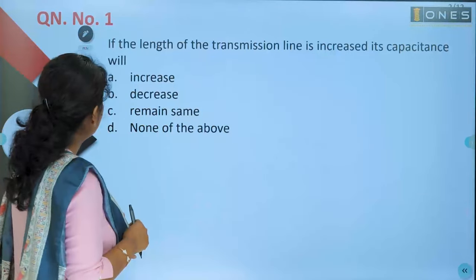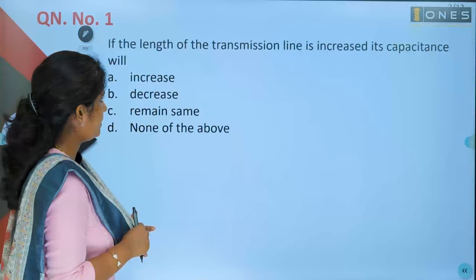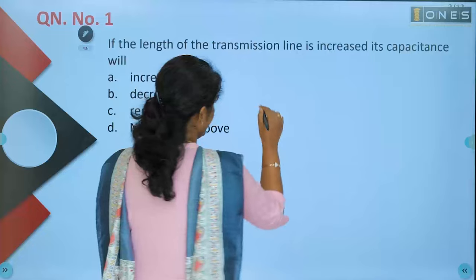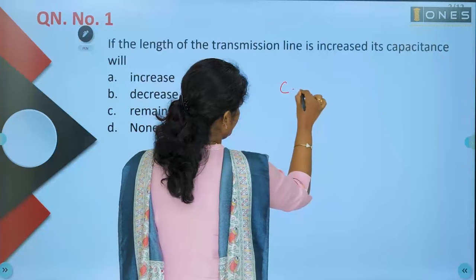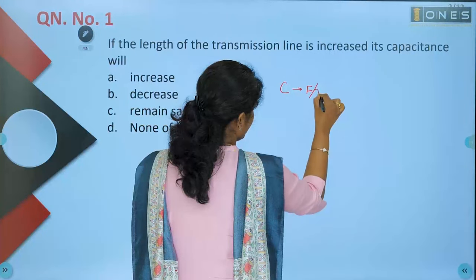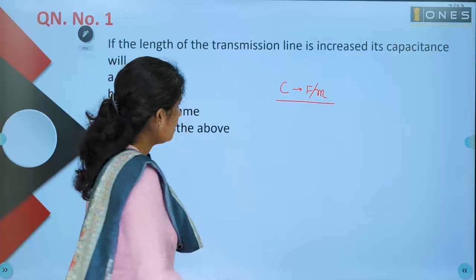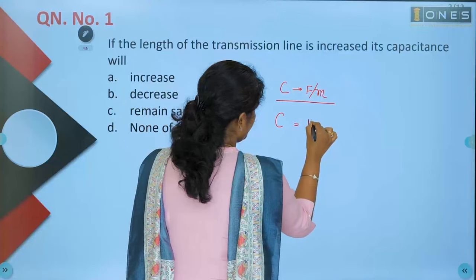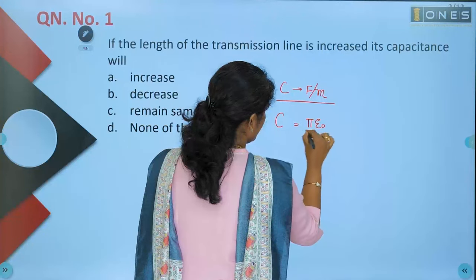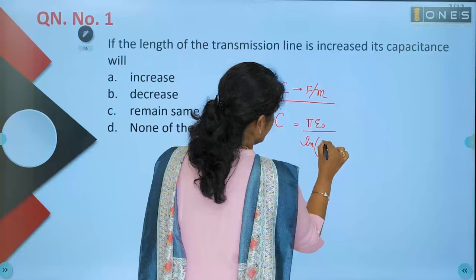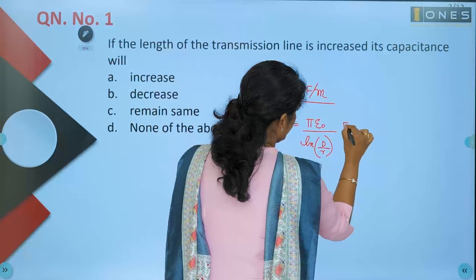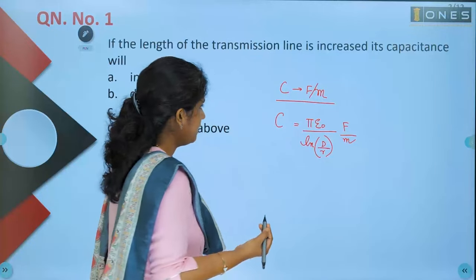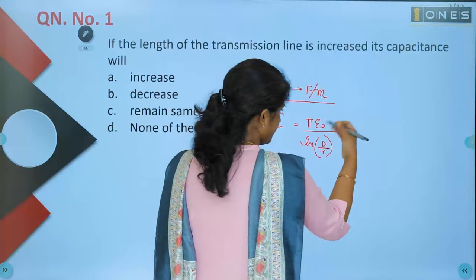Question number one: if the length of the transmission line is increased, its capacitance will... The capacitance is given in farads per meter. The formula for capacitance of a transmission line is given by pi epsilon zero divided by ln(d/r) farad per meter — this is capacitance per unit length.